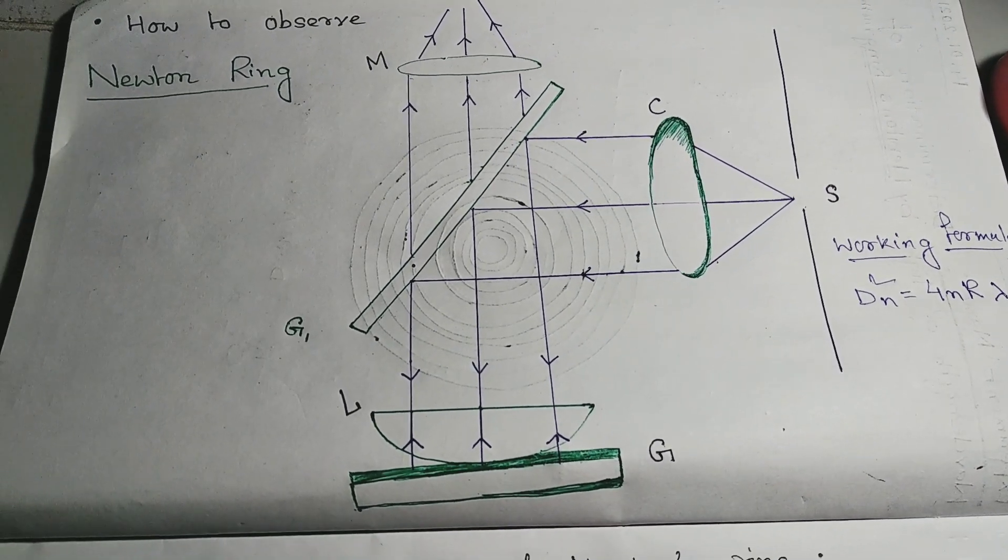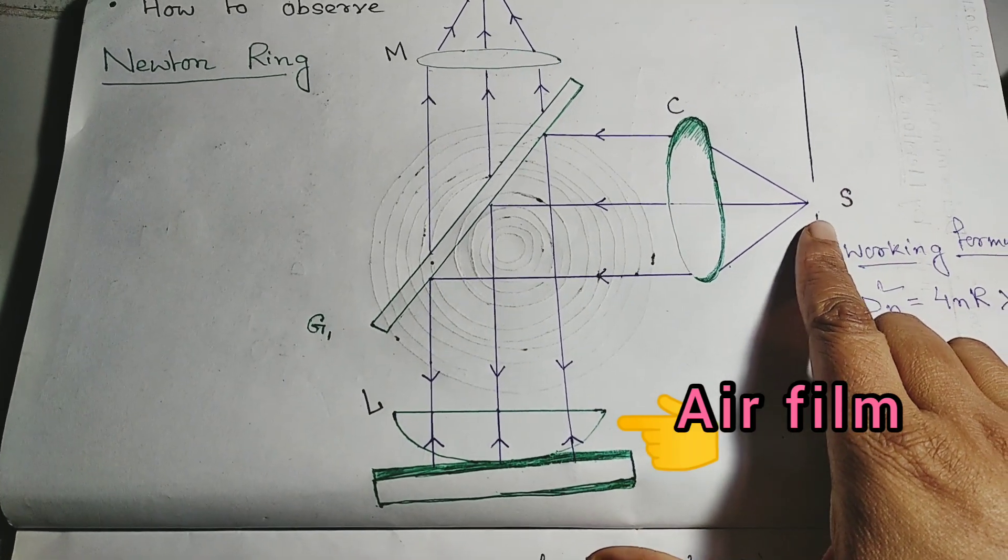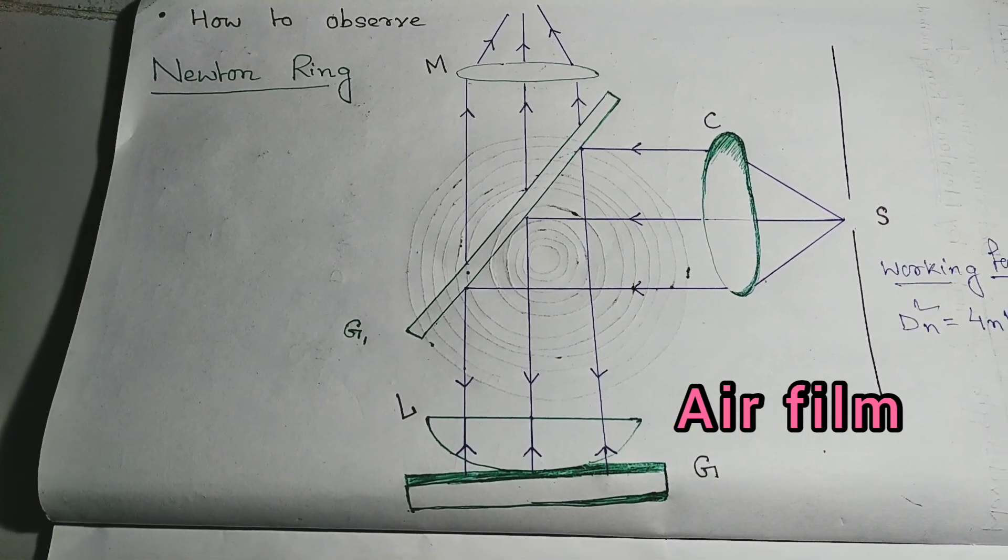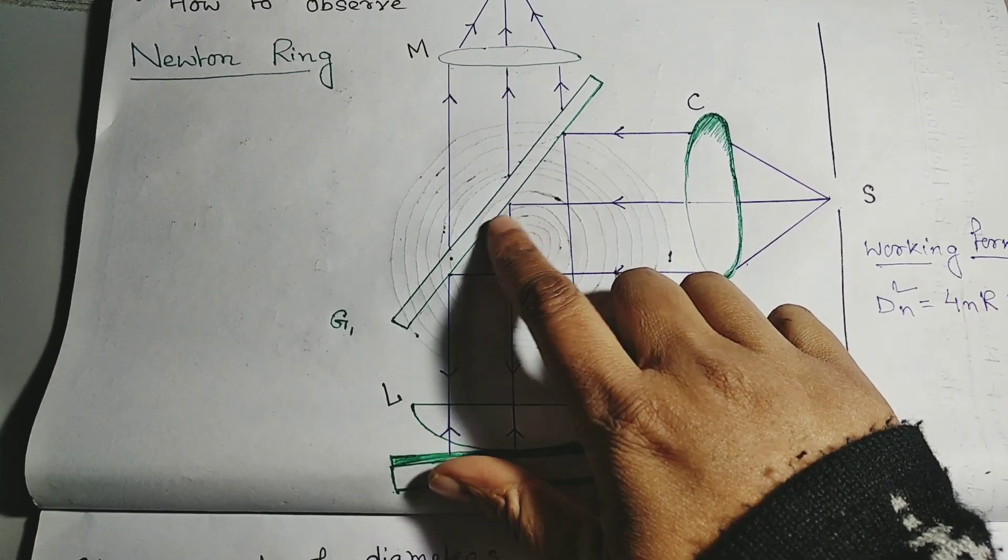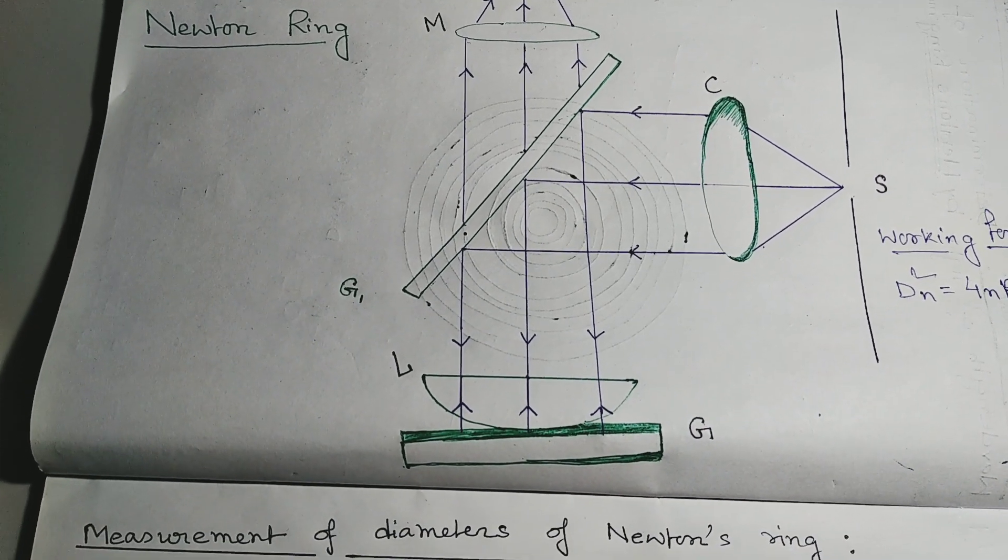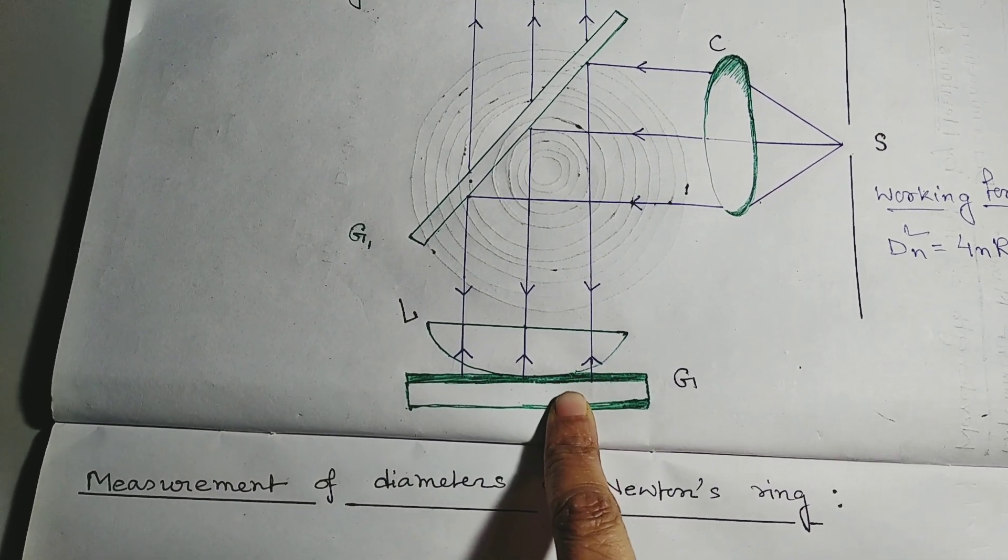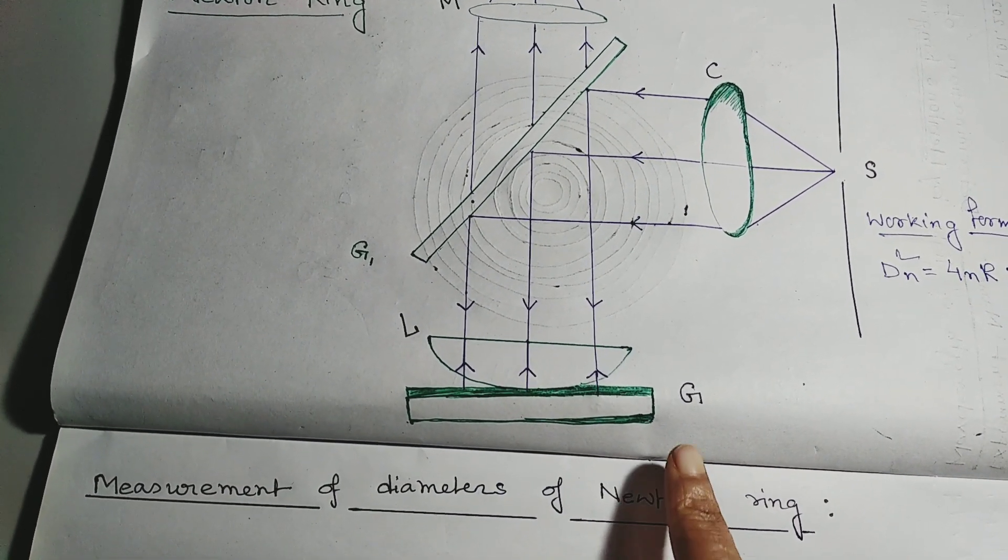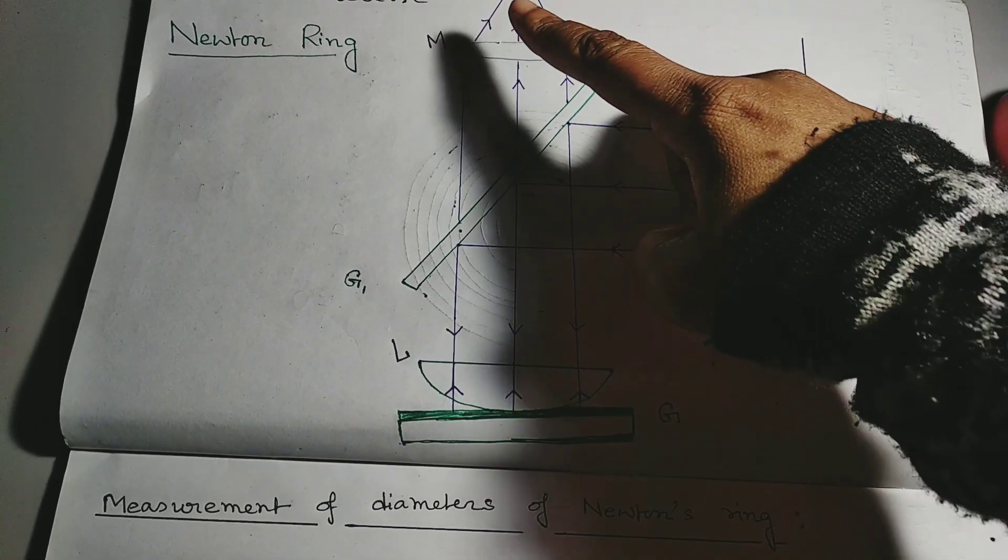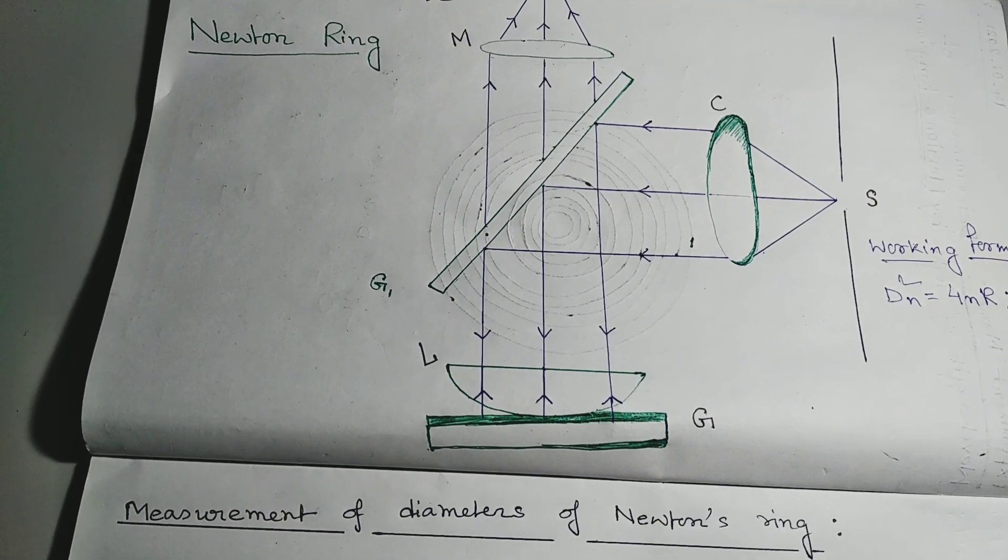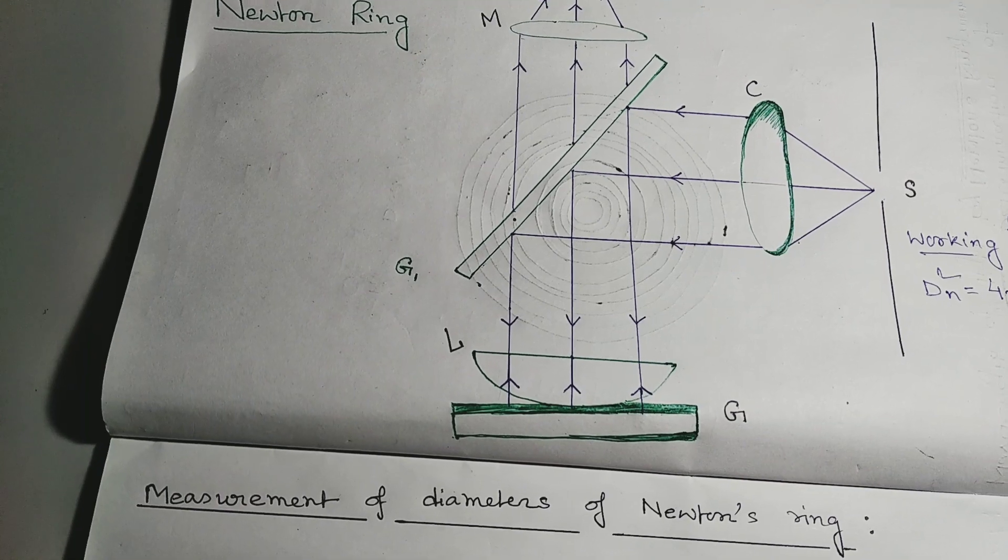If you see the diagram, what is happening? A horizontal beam of light falls on the glass plate G at an angle 45 degree. The plate G reflects a part of incident light towards the air flip enclosed by the lens capital L and the plate G. The reflected beam from the air frame is viewed with the microscope.